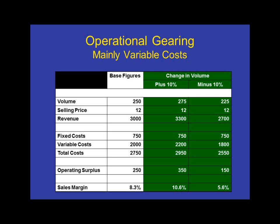In the period, the business sold 250 units at a selling price of $12 a unit, giving us revenue of $3,000. Take away the total cost of $2,750 — that leaves us with a surplus or profit of $250, which equates to a sales margin of 8.3%. That's the operating surplus of $250 as a percentage of the revenue figure of $3,000. In other words, for every $100 worth of goods or services sold, the operating profit was $8.30.